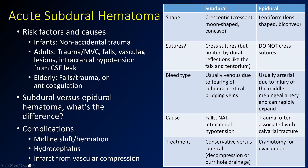Acute subdural hematomas can occur in young children and infants from non-accidental trauma, but mostly in adults from trauma such as MVCs or falls in the elderly, especially patients on anticoagulation. Subdurals tend to be crescent-shaped, cross sutures, and mostly result from tearing of bridging veins. Treatment can be conservative but sometimes requires decompression. Epidural hematomas, by contrast, are more lentiform, do not cross sutures, are often arterial from middle meningeal branches, and are almost always associated with fractures. If you see a hemorrhage not associated with a fracture, think subdural before epidural. Epidurals are more likely to require craniotomy.